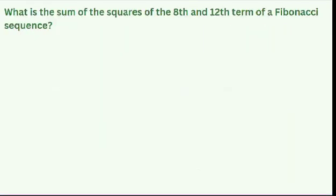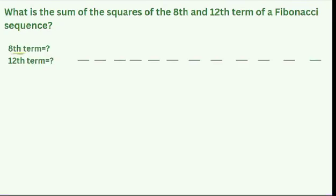Now we're gonna solve this question, which asks about the sum of the squares of the 8th and 12th terms of the Fibonacci Sequence. First, we need to find the value of the 8th term and the 12th term. From our recap earlier, F sub 1 is equal to 1 and F sub 2 is equal to 1. We're just gonna add these two values to find F sub 3, which is 2. Then continue adding each time until we reach the 8th term of the Fibonacci Sequence, which is 21.